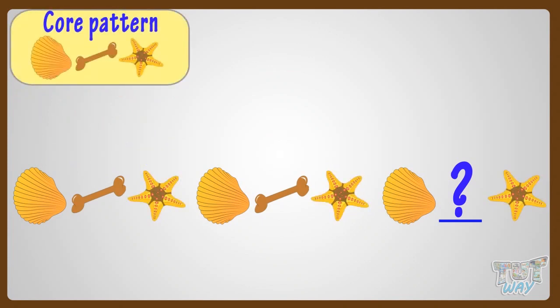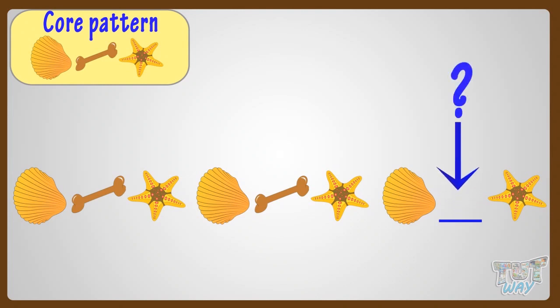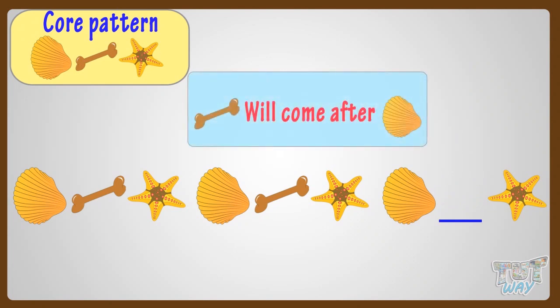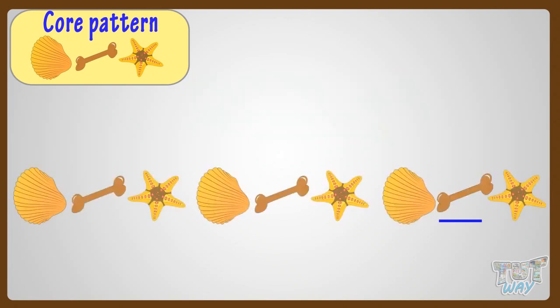Now we will find out what will come in the blank space to complete the pattern. From the core pattern, we see that after a shell, bone will come. So a bone will come in the blank space, and it will complete the pattern.